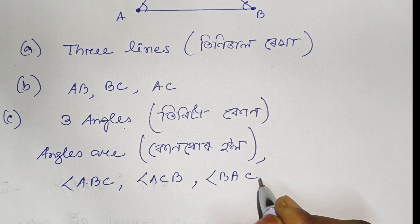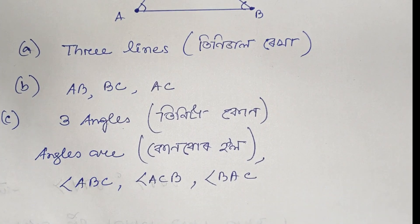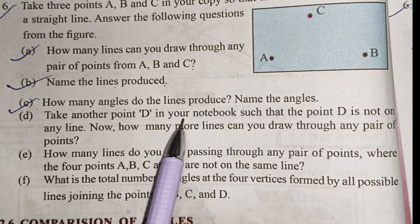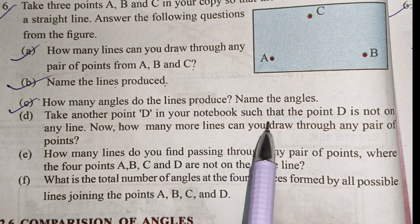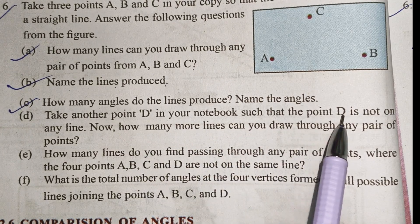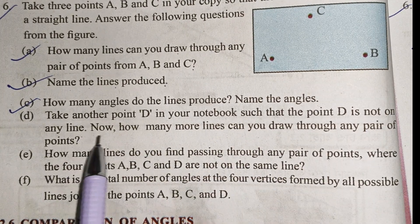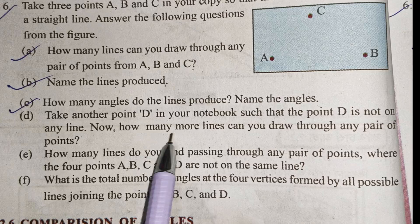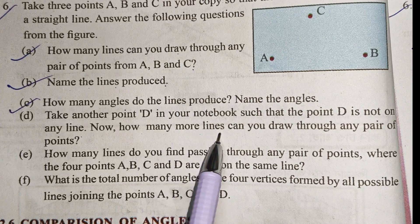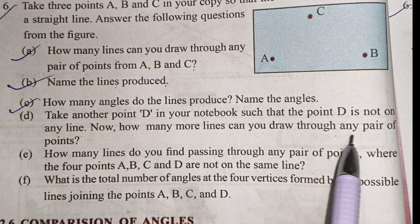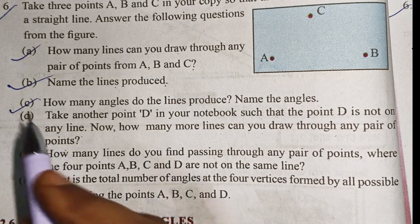Part D: Take another point D in your notebook such that point D is not on any line. Now, how many more lines can you draw through any pair of points?